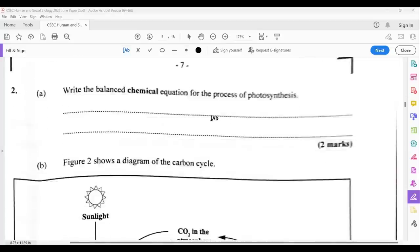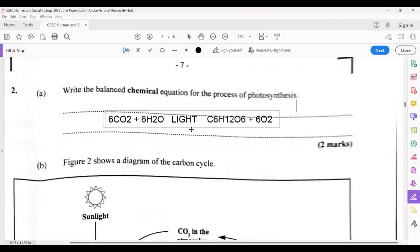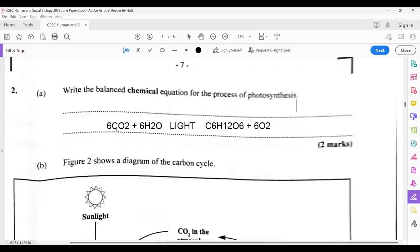Question 2. Write a balanced chemical equation for the process of photosynthesis. Photosynthesis raises its head in section A, living organisms and the environment. So the balanced equation would look like this. It's important to acknowledge that they asked you to balance the equation. So you have to have the six in front of the carbon dioxide, the six in front of the water, H2O, and the six in front of the oxygen. This balances it, whereby the reactants equal to the amount of products.